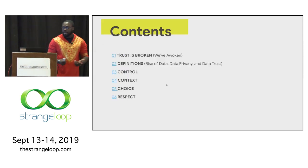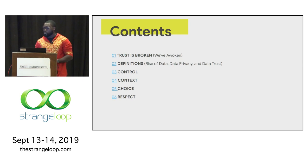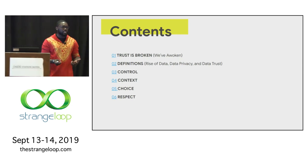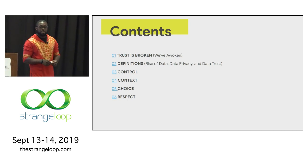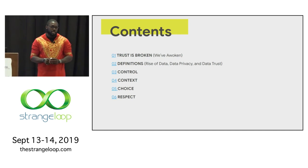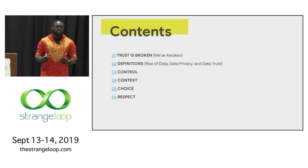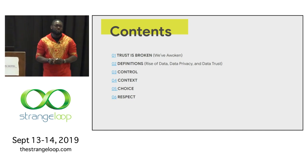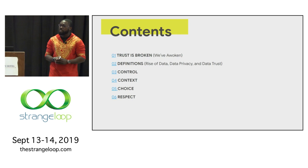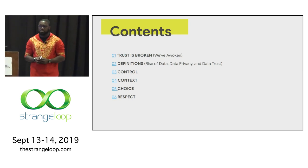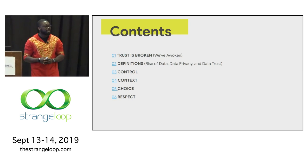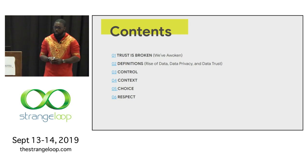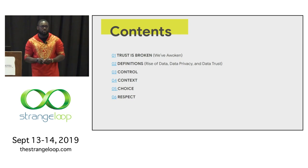We're going to cover a lot here. We're going to define the lay of the land — the evolving landscape of data privacy — and talk about what we mean by data privacy and data trust in the context of developing software applications in 2019. I have this concept called the three Cs that we have to consider: context, choice, and control. And there's a bonus at the end: respect.